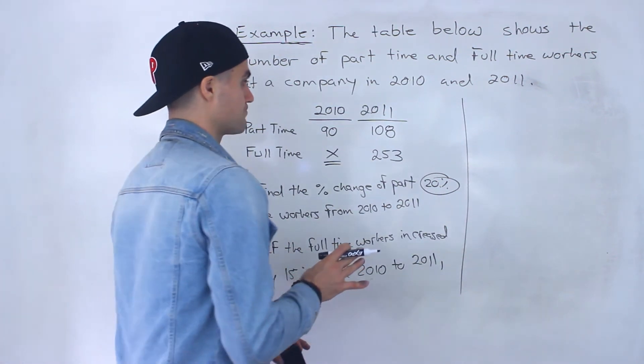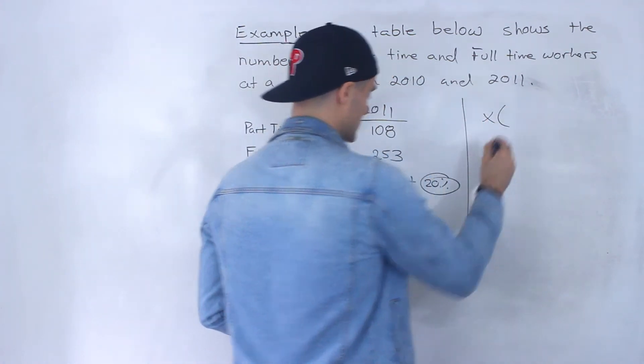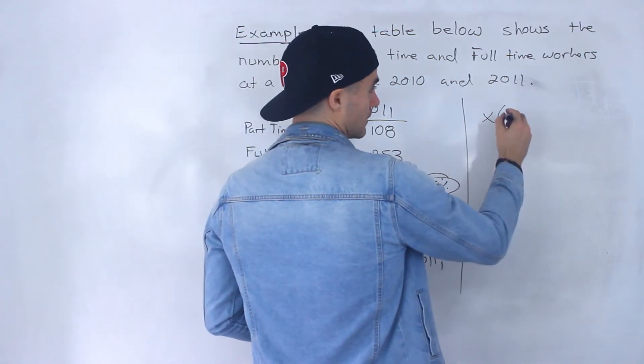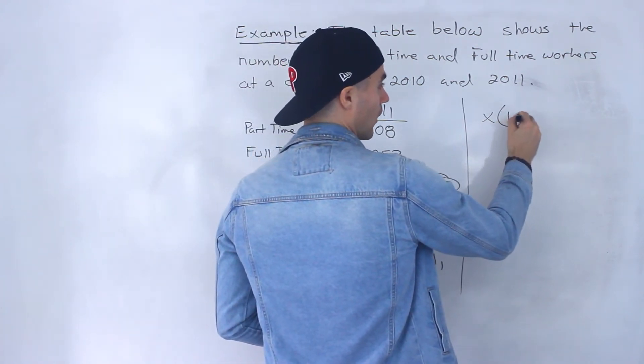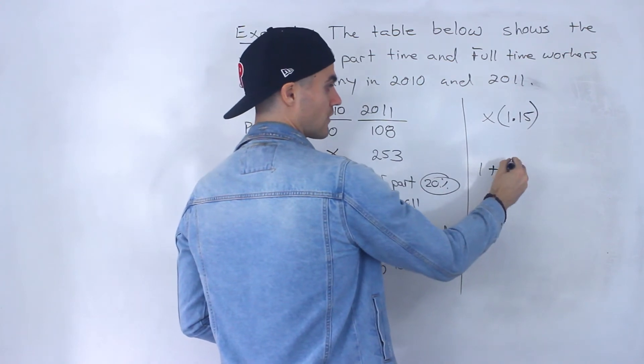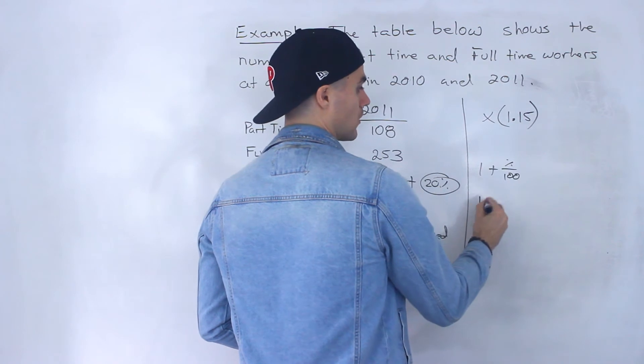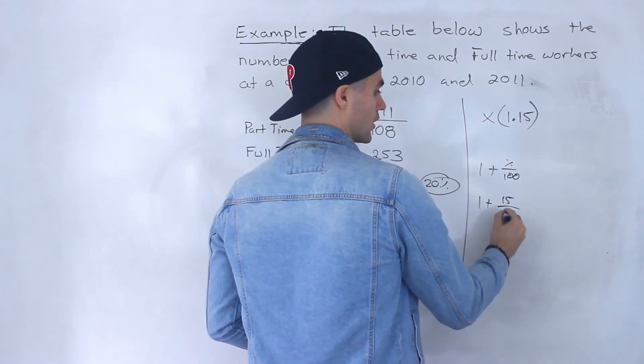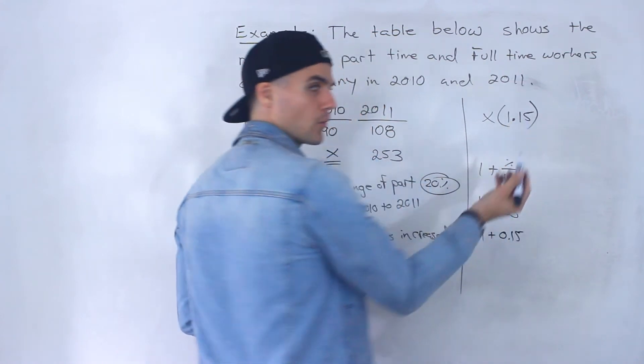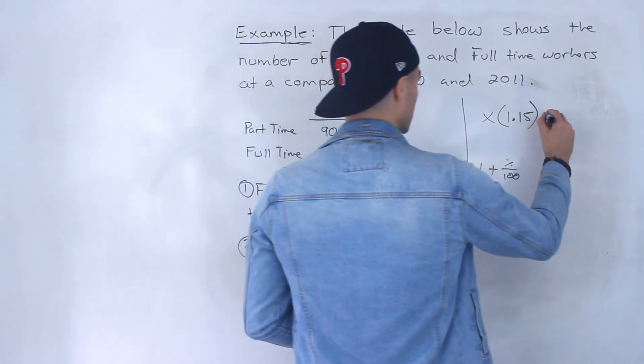We can take this x value and if it's going to grow by 15 percent then we would multiply it by 1.15. That's 1 plus whatever that percentage increase or decrease is divided by 100, so 1 plus 15 over 100, 1 plus 0.15 which is 1.15, that's where I got that from. And that is going to equal 253.